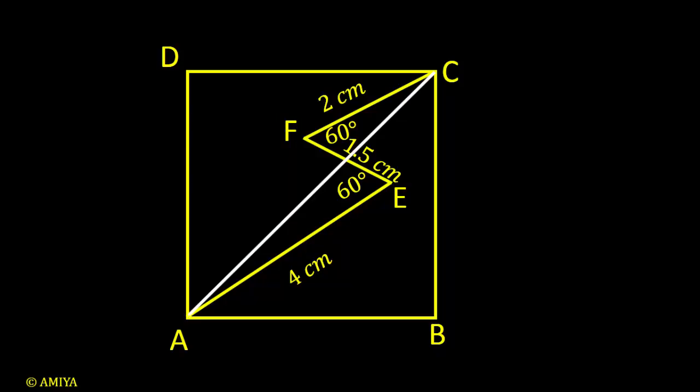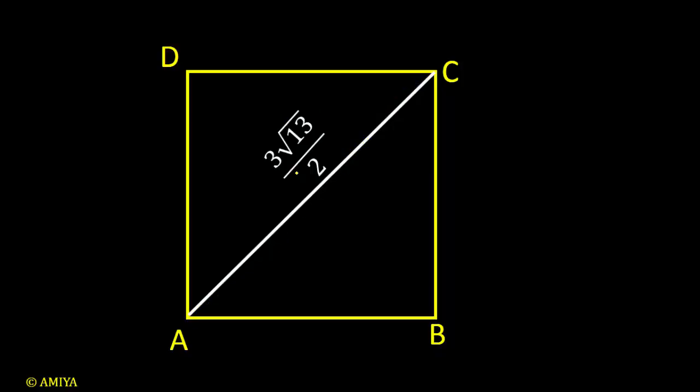Now what is AC? Actually, AC is the diagonal. And what is the value of AC? AC is 3 root 13 by 2.